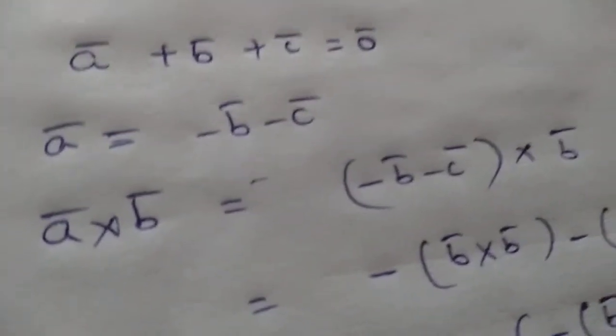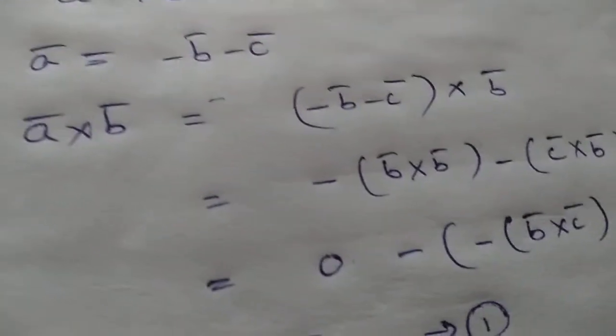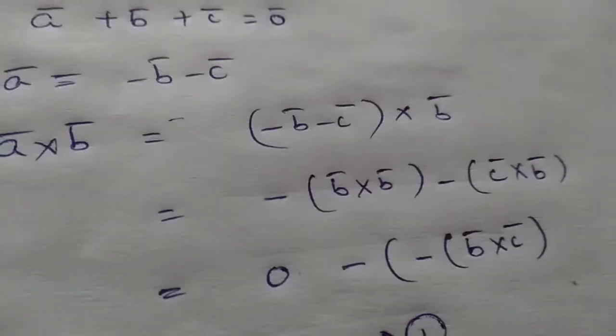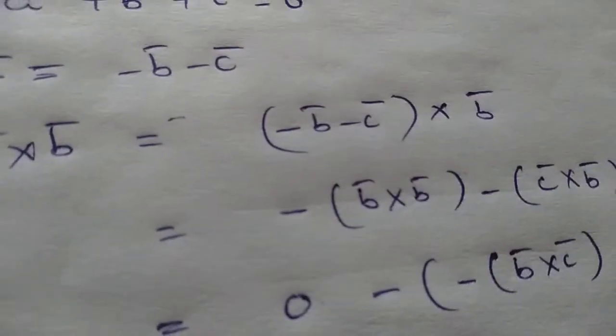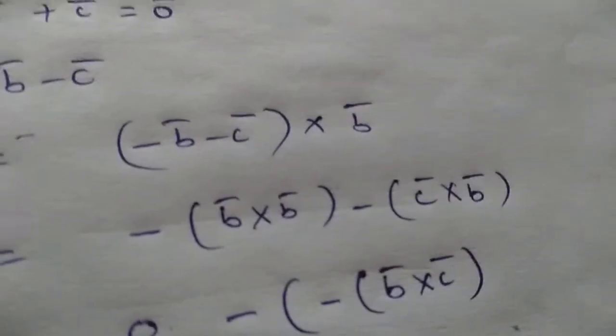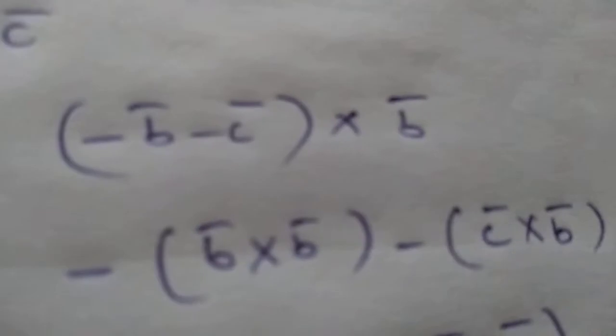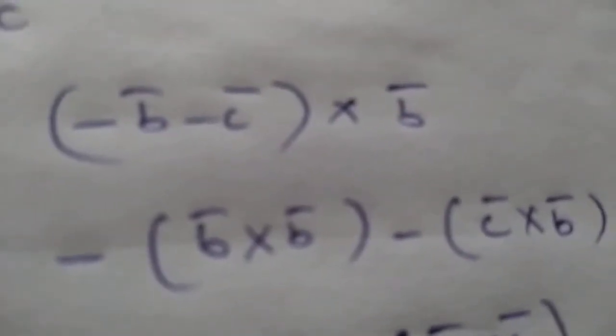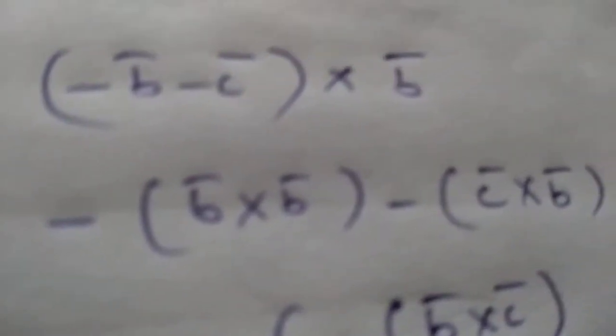From the given condition, ā = -b̄ - c̄. So, ā × b̄ = (-b̄ - c̄) × b̄. Expanding: this gives minus b̄ × b̄ minus c̄ × b̄. This is the first part and the second part.